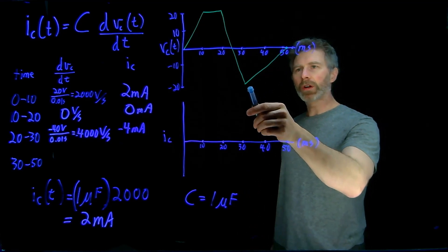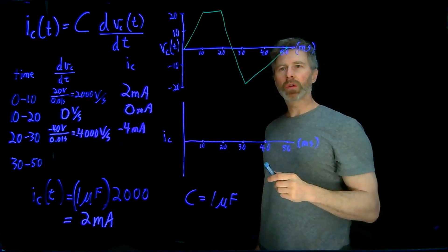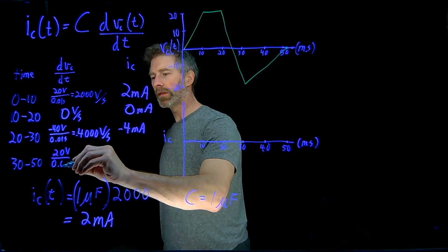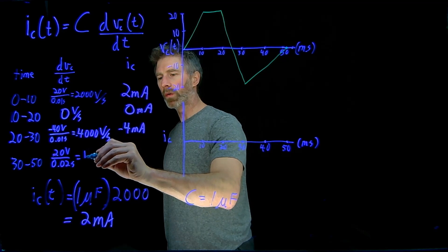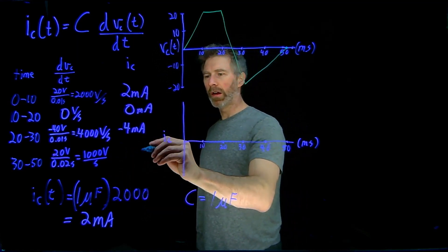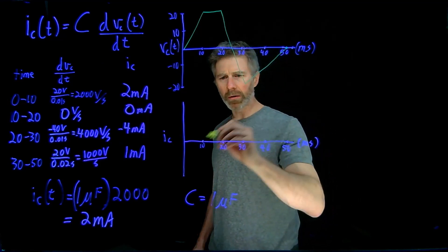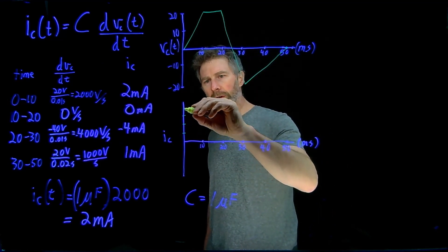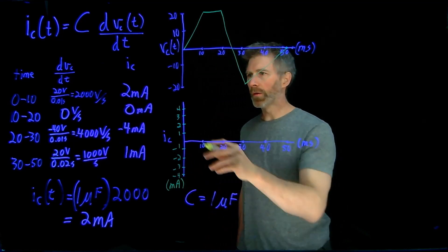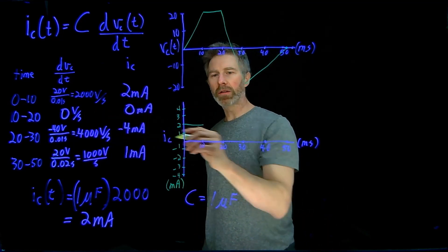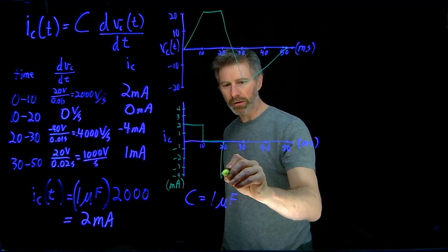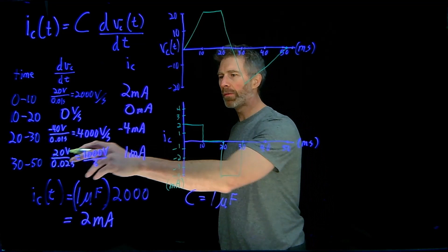From 30 to 50 milliseconds — a time span of 20 milliseconds — the voltage changes by plus 20 volts. So that's 20 volts per 0.02 seconds, which is 1000 volts per second. Plugging that into the equation gives us 1 milliamp. Plotting this out with a scale of 1 through 4 milliamps and negative 1 through negative 4: from 0 to 10ms it's 2 milliamps, from 10 to 20ms it's 0 milliamps, from 20 to 30ms it drops to minus 4 milliamps, and from 30 to 50ms it's 1 milliamp.